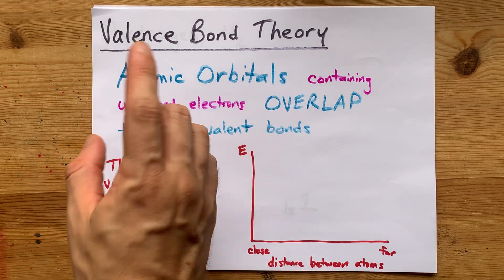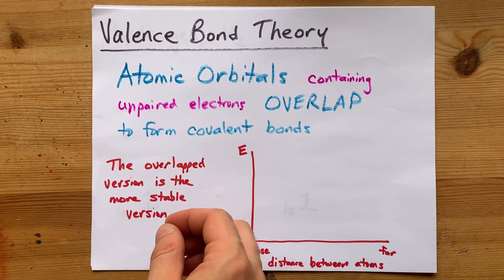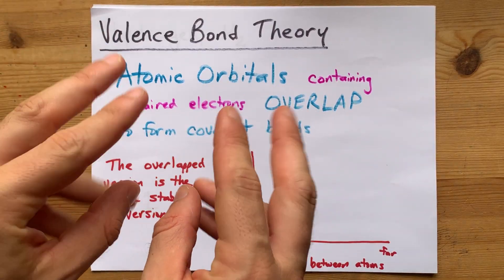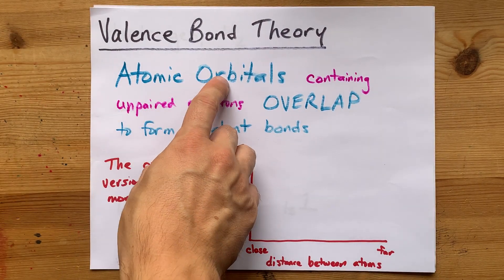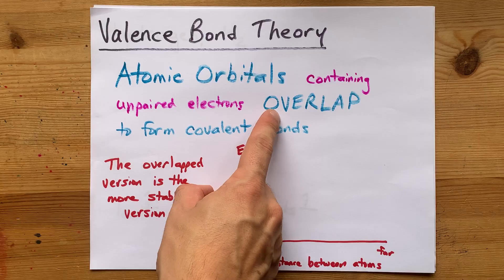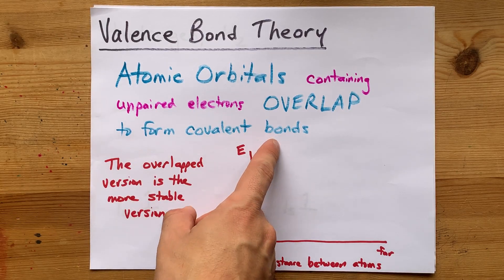What is valence bond theory? It's the idea that when two atoms are bonding, it's the atomic orbitals that are overlapping to form those covalent bonds.